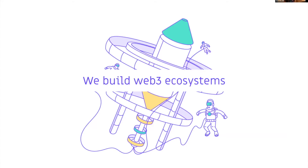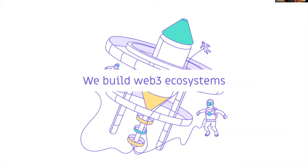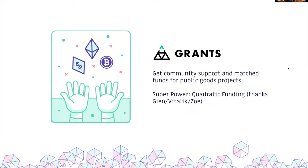What we do at Gitcoin is we build Web3 ecosystems. We have a suite of products that help you onboard and retain builders into your Web3 ecosystem — primarily a tool called Gitcoin Kernel, which is one of the top accelerators and incubators in the space for Web3 talent. We've got hackathons and we've also got Gitcoin Grants. Over time, we have deployed about $40 million worth of funding for open source software, accelerating in the last few quarters to about $6 million per quarter.